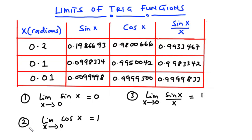Now the second equation: the limit of cos x as x approaches 0 is equal to 1. From the table, when x is 0.2, cos x is 0.9800666. When x reduces to 0.1, cos x is 0.9950042. And as x further reduces to 0.01, cos x is 0.9999500, which is getting closer to 1. So this equation is also true.